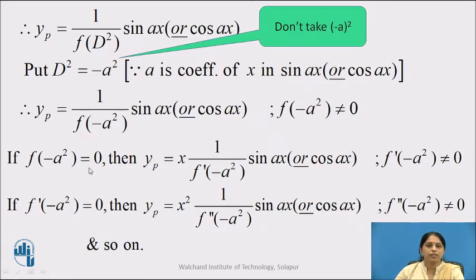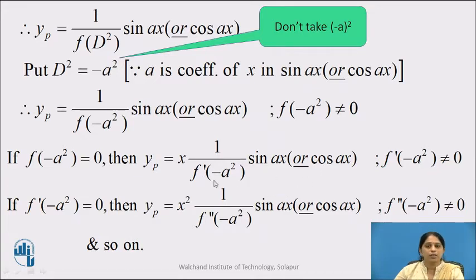If the denominator is equal to 0, we multiply by x and take the derivative of f(D), and repeat the same procedure, which gives us yp equal to x into 1 upon f′(−a²) into sin x or cos x, provided again the denominator is nonzero. And if this denominator is also 0, repeat the same procedure till you get a nonzero denominator.